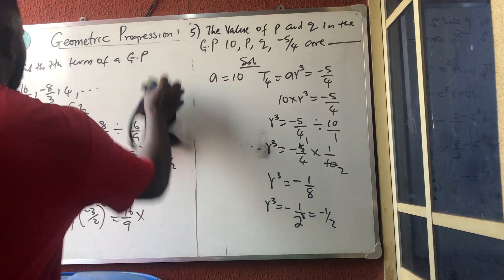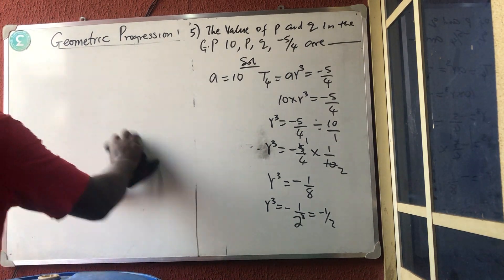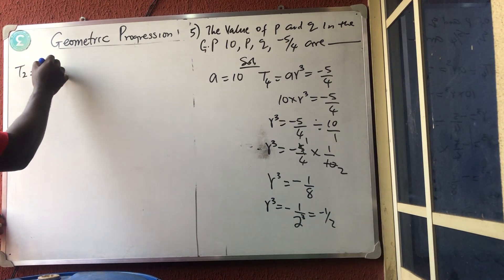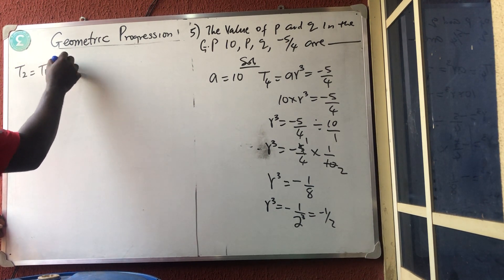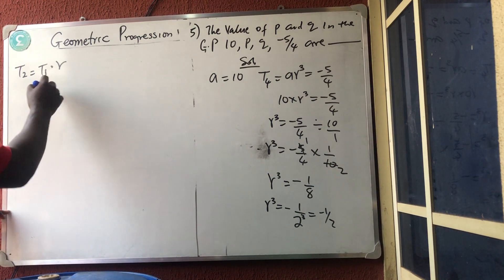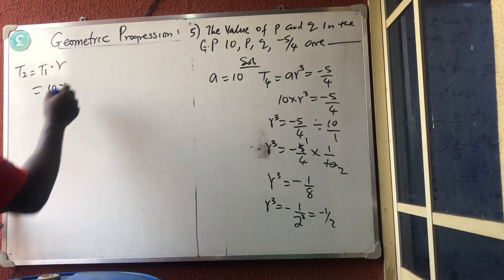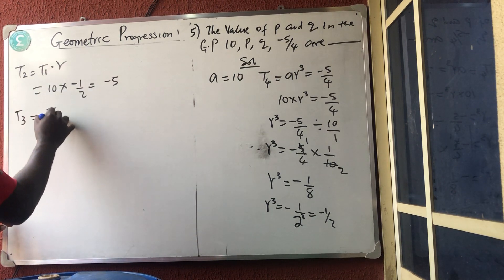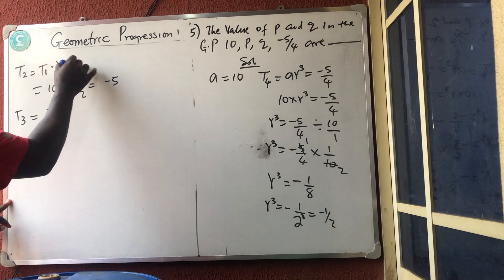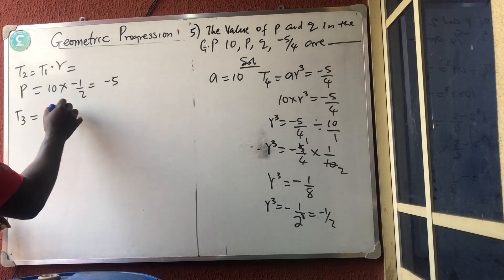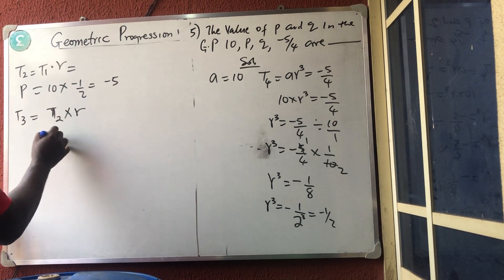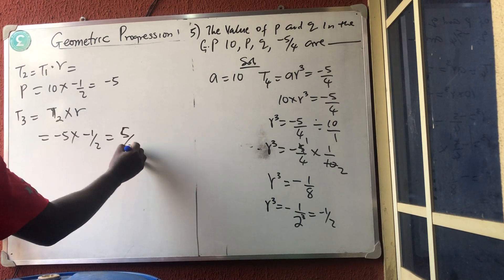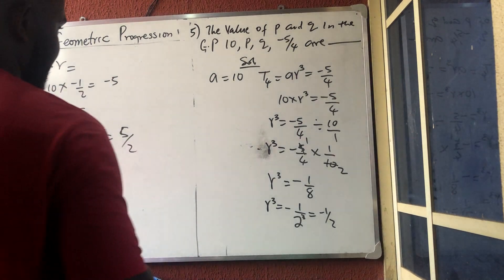So r = −1/2. To find p (second term): p = a·r = 10 × (−1/2) = −5. To find q (third term): q = second term × r = −5 × (−1/2) = 5/2. So p = −5 and q = 5/2.